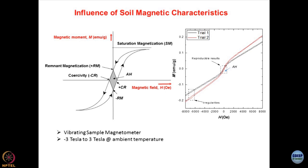There are two properties we look for in soils or any geomaterial. One is known as remanent magnetization: at zero magnetic field, it is the amount of magnetization which still remains in the system — this could be both positive and negative depending upon the magnetic field direction. The second parameter is coercivity (CR), and you will have two values of CR and two values of remanent magnetization (Rm).